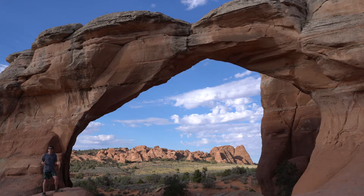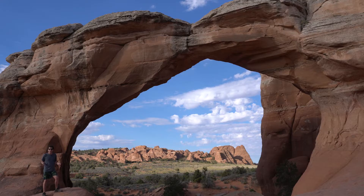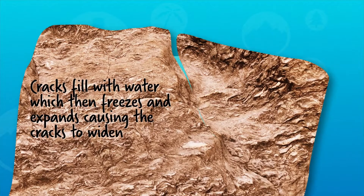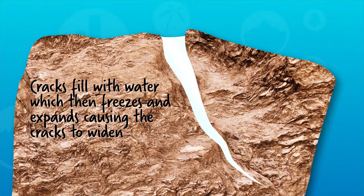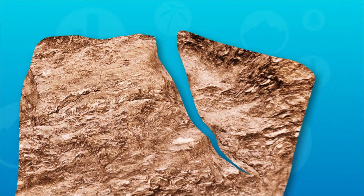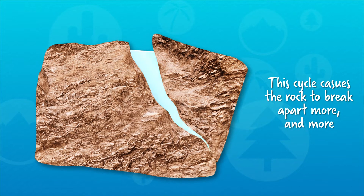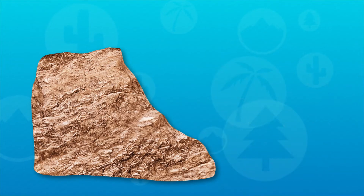Wind plays an important role in shaping the landscape of Arches in particular, because it picks up sand grains from the desert and blows them across a mostly treeless landscape, basically acting like a sandblaster. And while we are in a desert, it does rain, and it does get below freezing, especially at night. When rainwater seeps into cracks of the rocks and freezes, it expands, pushing the rocks apart. Over time, these cracks get bigger, which allows for more rainwater to get in. When that freezes and expands, it pushes the rock apart even further, creating this vicious cycle that breaks apart the rocks.